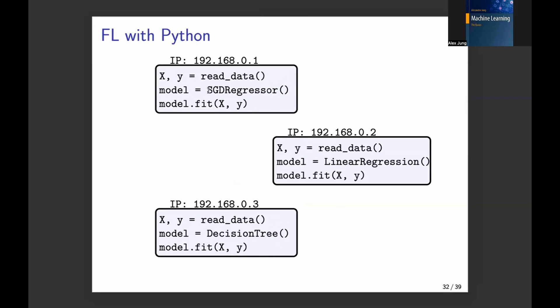So this device here has an SGD, a stochastic gradient descent regressor model type of model. This here has a linear regression model, and this here is a decision tree. So these are quite different models, but you will see how we can still couple them, how they still can collaborate with each other to train each of these models better.